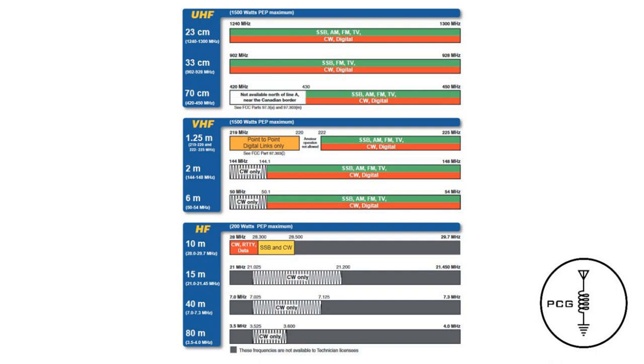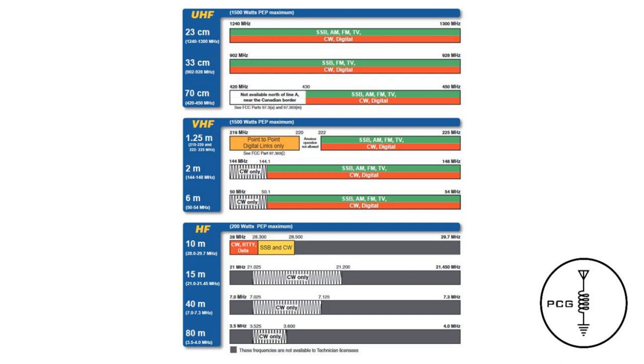You may also use up to 1500 watts peak envelope output on the VHF and higher bands, however you are limited to 200 watts on the HF bands. Privileges on the 6 meter band are also available.